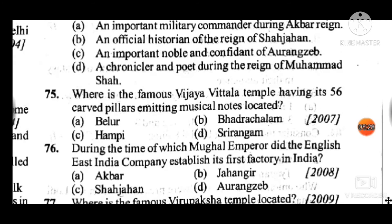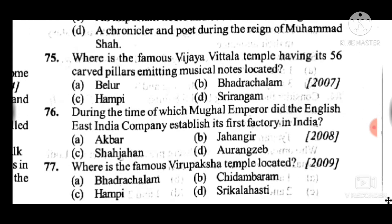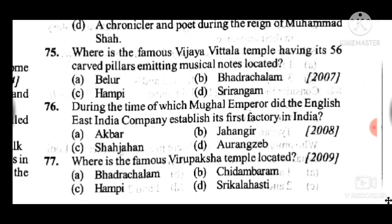Question 76: During the time of which Mughal emperor did the English East India Company establish its first factory in India? Answer to question 76 is B: Jahangir. Question 77: Where is the famous Virupaksha Temple located? Answer to question 77 is C: Hampi.